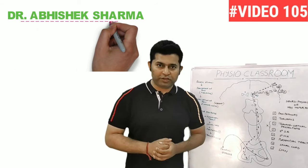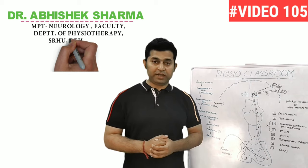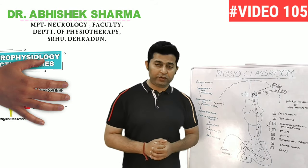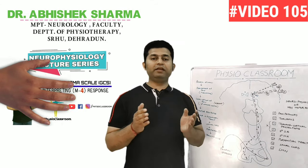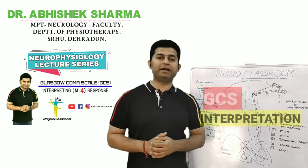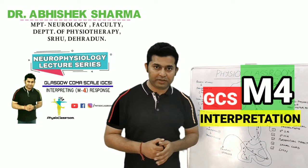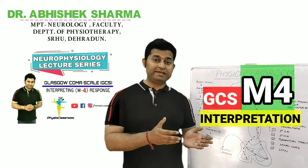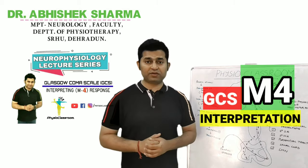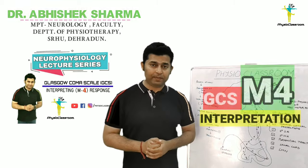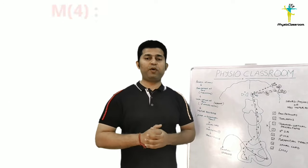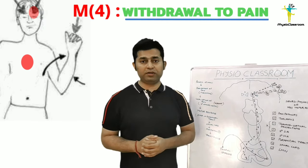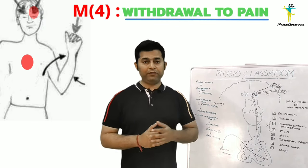Hello everyone, you're watching Physio Classroom channel. In today's video we are going to discuss the neurophysiological interpretation of the M4 motor response that we see in the Glasgow Coma Scale. This response is characterized by a withdrawal response to a painful stimuli.